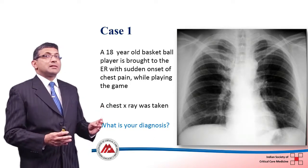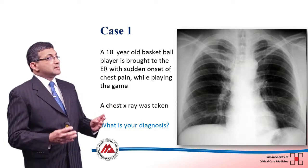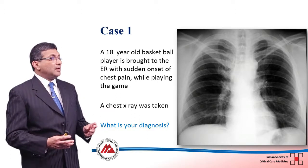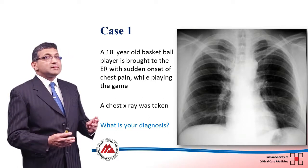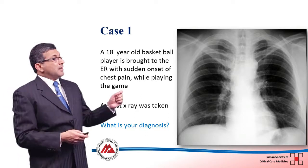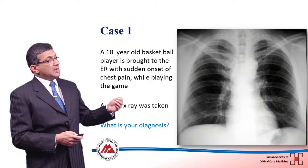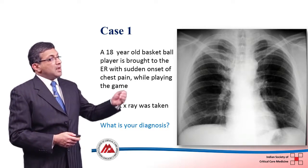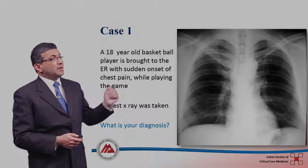Second is inspiration — has the x-ray been taken with full inspiration? If it is a fully inspired x-ray, you will see at least five to six ribs anteriorly and nine to ten ribs posteriorly. Third is exposure — when you look at exposure, you are looking at how many vertebrae you can see. If it's a well-exposed x-ray, you can just barely see the vertebrae through the cardiac shadow.